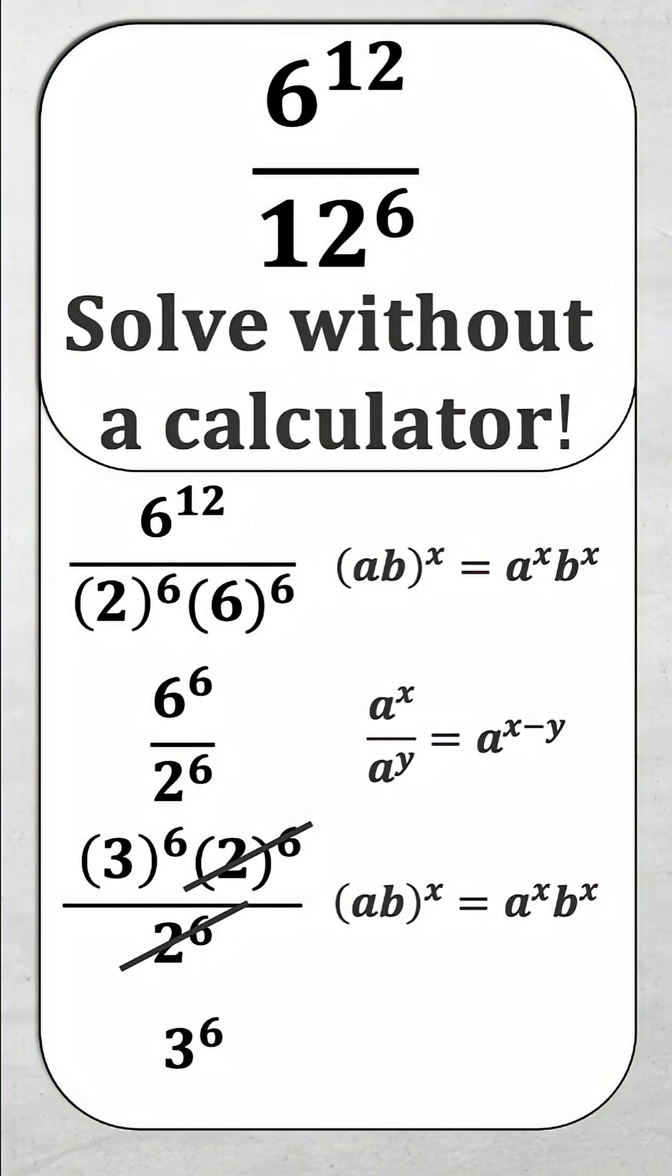Now maybe you're wondering, wait a minute, I can't do 3 to the power of 6 in my head. Sure you can. 3 times 3 is 9, times 3 is 27, times 3 is 81, times 3 is 243, times 3 is 729.